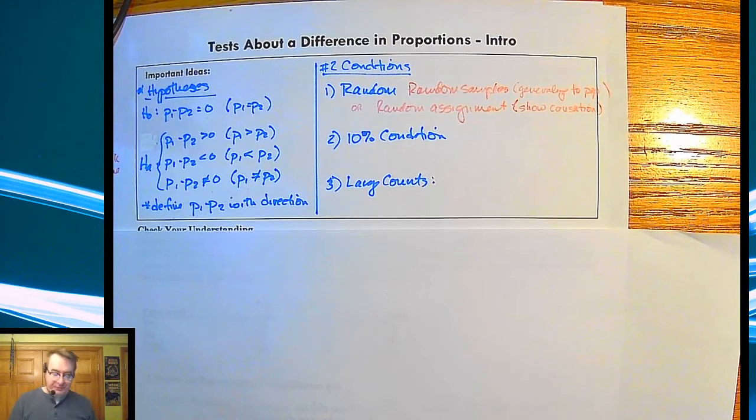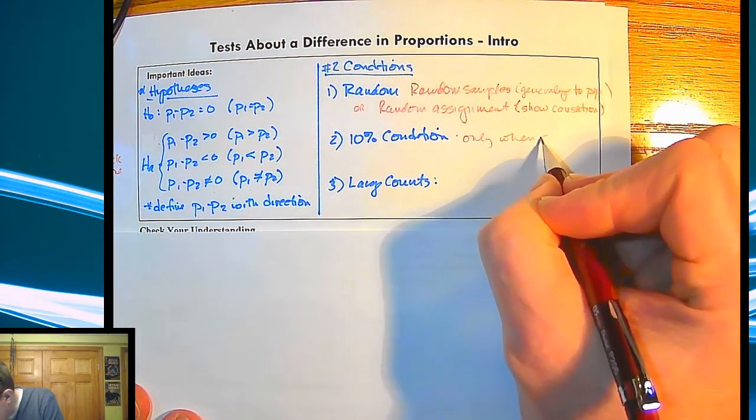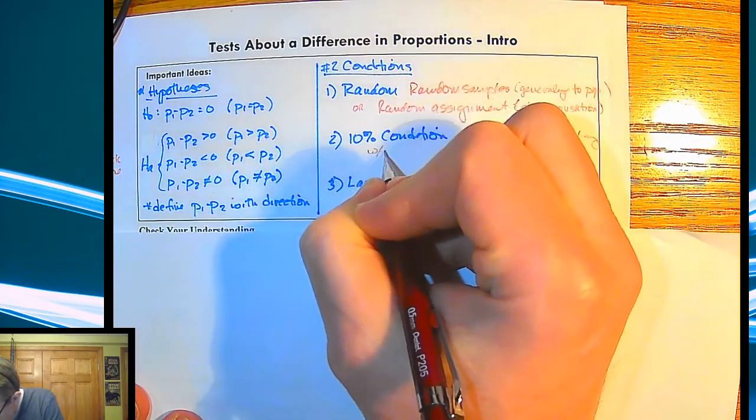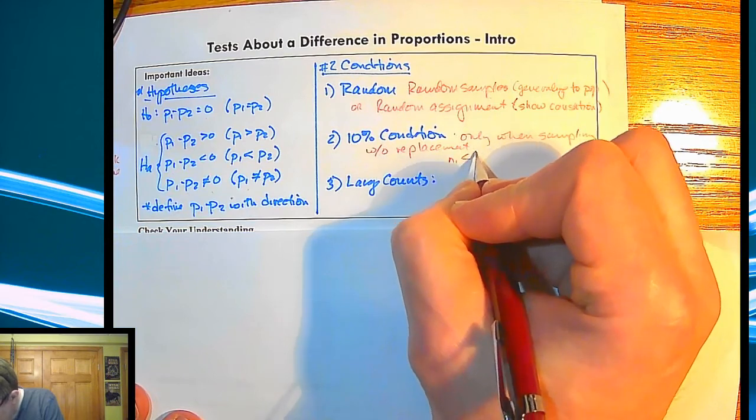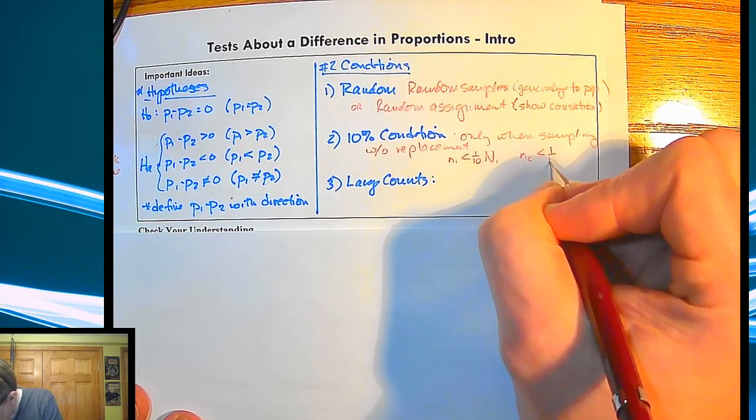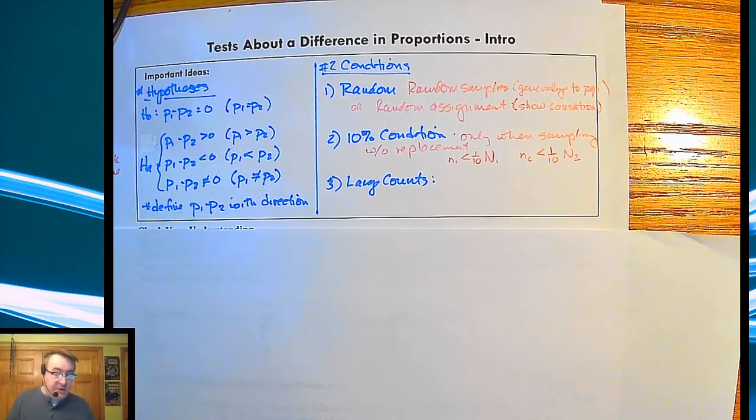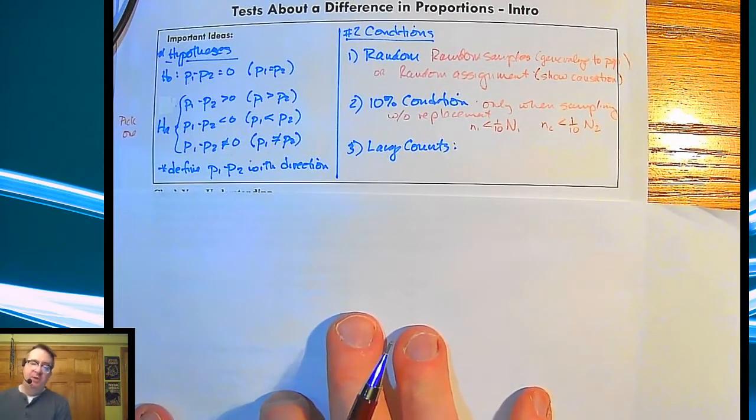The 10% condition. This happens only when sampling without replacement. I break this lead more often than I could possibly imagine. So only when sampling without replacement, remember N1 has to be less than one-tenth of the population of N1. N sub 2 has to be just less than, not less than or equal to, of N2. So if you're not doing sampling, it doesn't matter. Like if you're doing random assignment, we don't need to worry about the 10% condition, which is kind of cool.